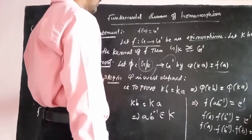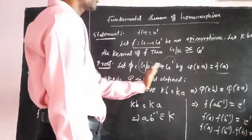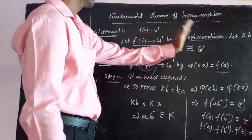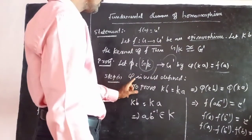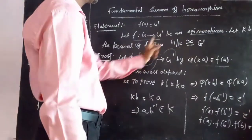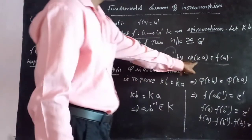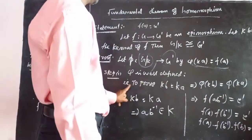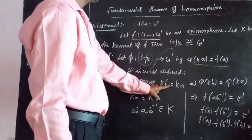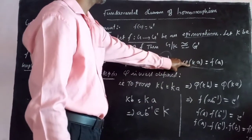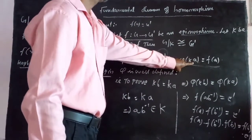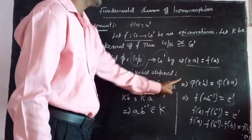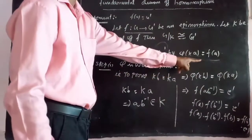The one-to-one function: F(x) = F(y) implies x = y. For well-definedness: x = y implies F(x) = F(y). So π of KA — if KA = KB, then π(KA) = π(KB). We take the LHS: KB = KE implies π(KB) = π(KA).